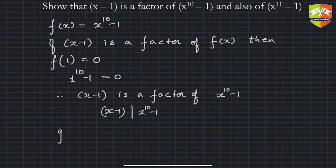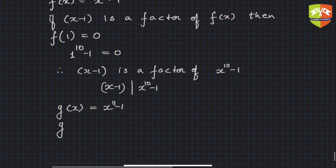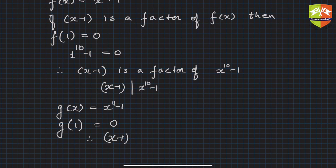Let's say g(x) is equal to x^11 - 1. So what will be g(1)? It's again 0. You can check g(1) is 0. Therefore, (x - 1) divides (x^11 - 1) as well.